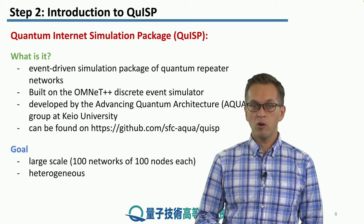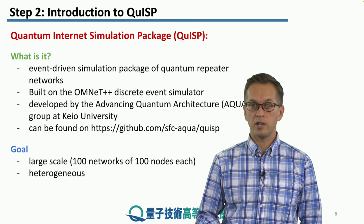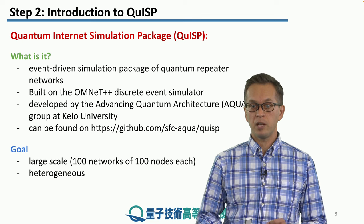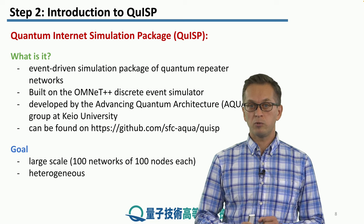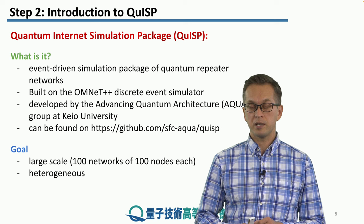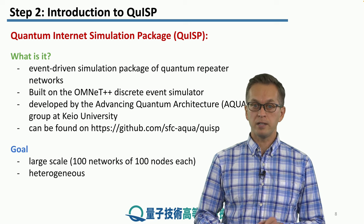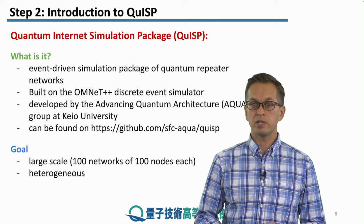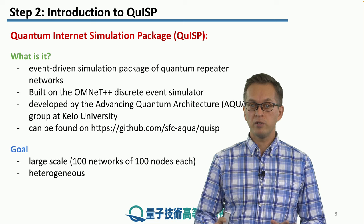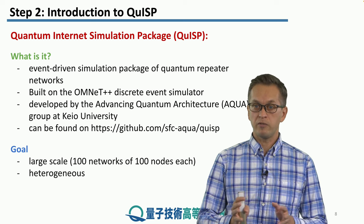The goal of QISP is to simulate large heterogeneous networks. Large, here we're talking about 100 networks, where each network contains 100 nodes, where each node contains up to 100 qubits. The important part is that the networks themselves are heterogeneous, meaning not everything is uniform, but different technologies are used in different networks.